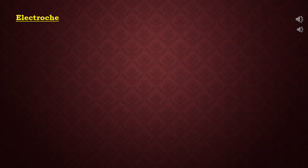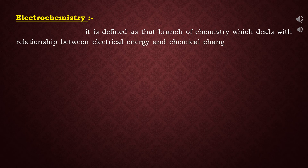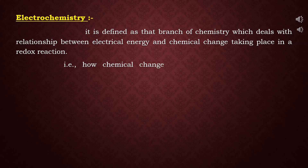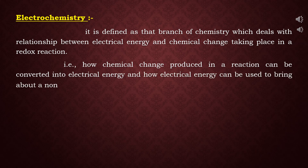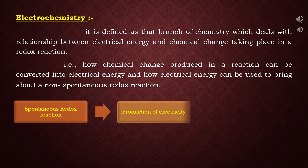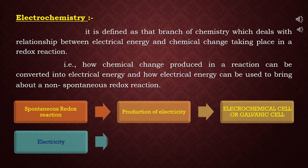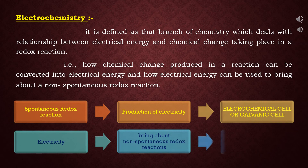First of all, what is electrochemistry? It is defined as that branch of chemistry which deals with the relationship between electrical energy and chemical change taking place in a redox reaction — how chemical change in a spontaneous redox reaction can be converted into electrical energy, which we study under electrochemical cell or galvanic cell, and how electrical energy can bring about a non-spontaneous redox reaction, studied under electrolysis or electrolytic cell.